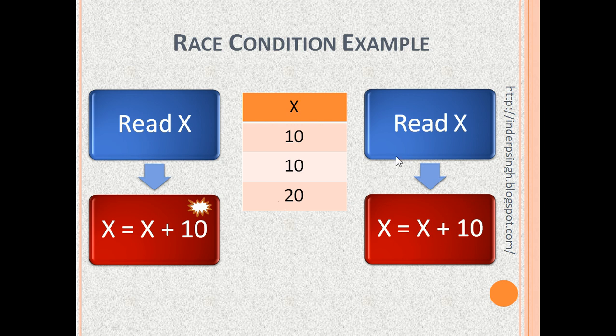Now, the second process has also read x as 10 and it also increases x by 10. So, x becomes 20 again,